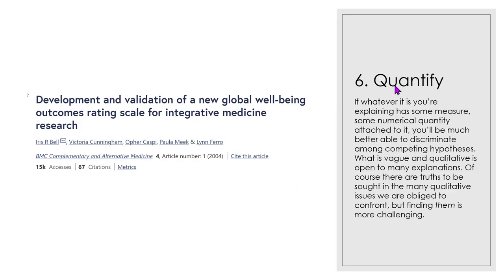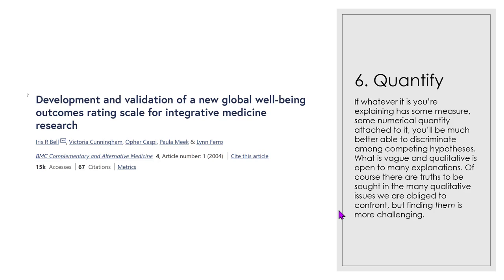Quantification is also pretty important. You want to have effects of the data in a quantifiable format — can you put numbers to that? Is there a measure of this? When we can use actual numbers and have some statistical analysis, that's going to lend a lot more support for the credibility of the discovery or the conclusions being made. If you have a chain of arguments, every link in that chain has to work, including the premise — not just most of them.